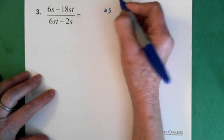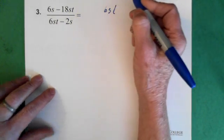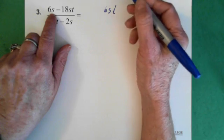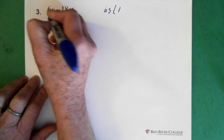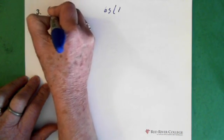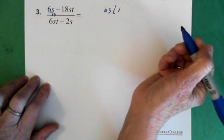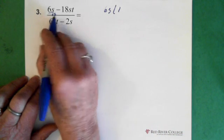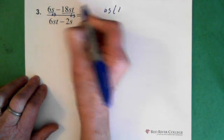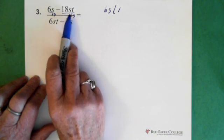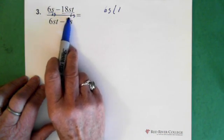We're left with 1. And essentially what you're doing is just dividing this by the 6s. If you divide this by 6s, you have to divide this by 6s. So when we divide 18st by 6s, we end up with, and don't forget it's a negative here, so minus, we end up with 3t.